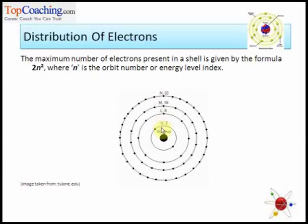Similarly, N-shell is at fourth place from the nucleus. Hence its orbit number is 4. And hence the number of electrons in this orbit would be 4 square is equal to 16 into 2, which is equal to 32.